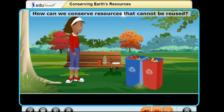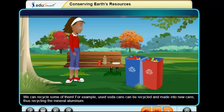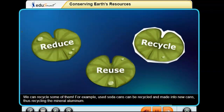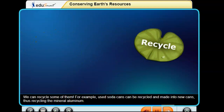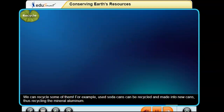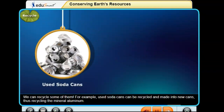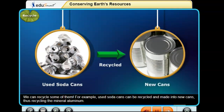How can we conserve resources that cannot be reused? We can recycle some of them. For example, used soda cans can be recycled and made into new cans, thus recycling the mineral aluminum.